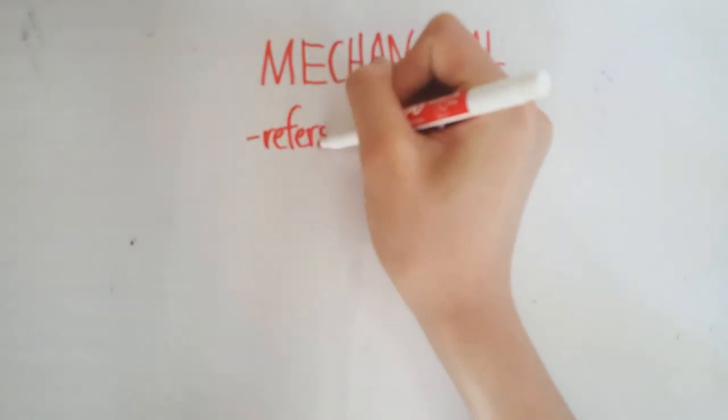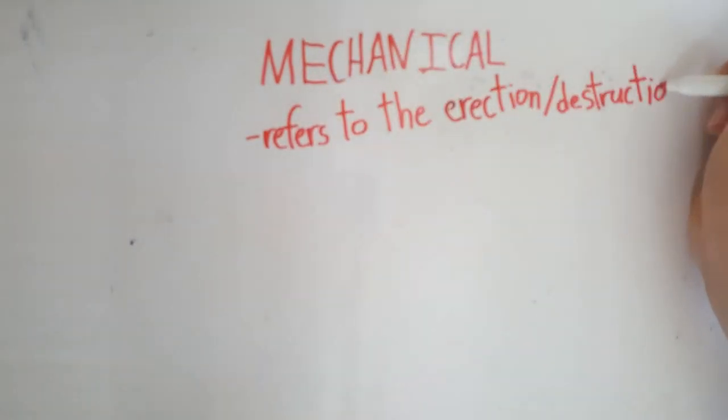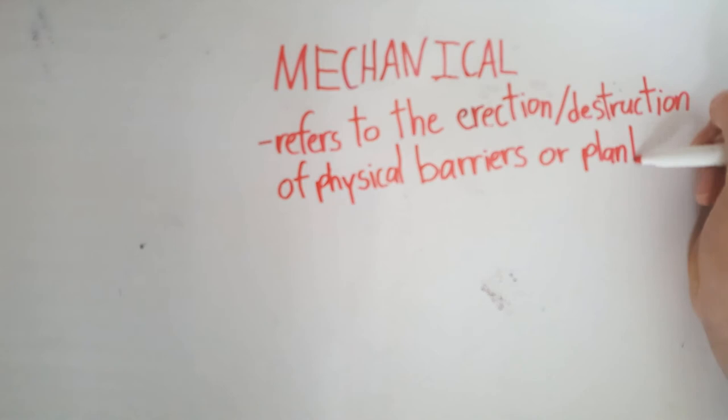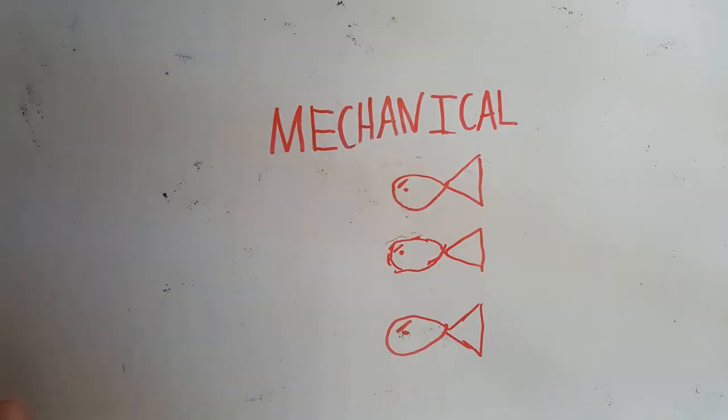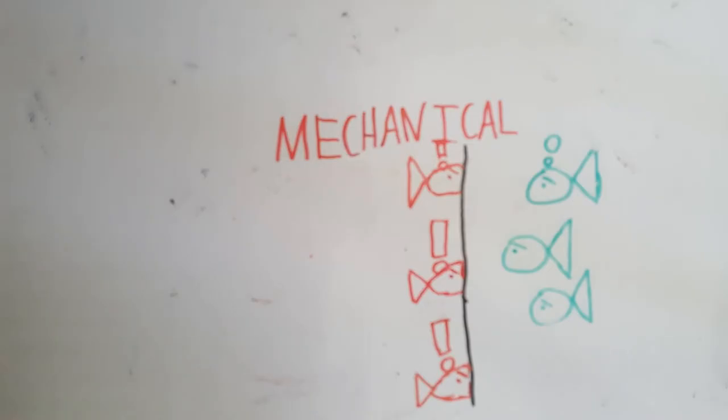Now let's talk about mechanical control. Mechanical control refers to the erection or destruction of physical barriers or plants. For example, if there is an invasive species of fish that migrated year-round, a physical wall will be able to block them off.